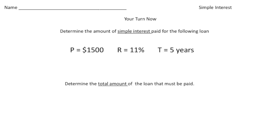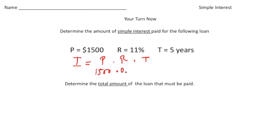Welcome back — let's see how you did. The practice problem: determine the simple interest paid on a $1,500 loan at 11% for 5 years. Step one, write the formula: I equals P times R times T. Plug in the values: $1,500 times 0.11 times 5. That gives us an interest amount of $825 — that's the fee to borrow $1,500.